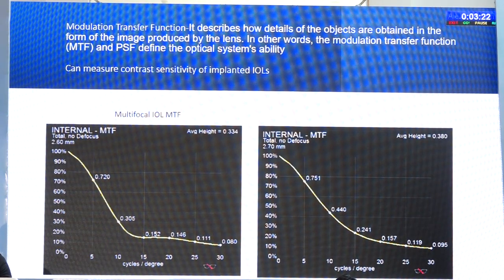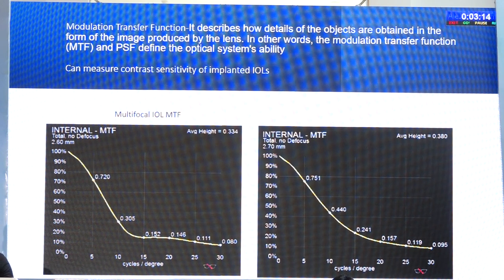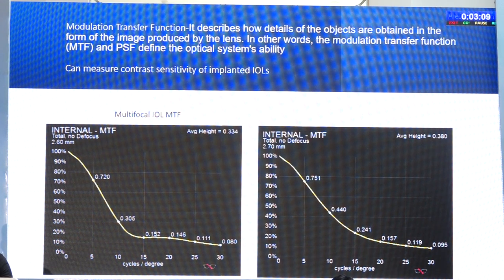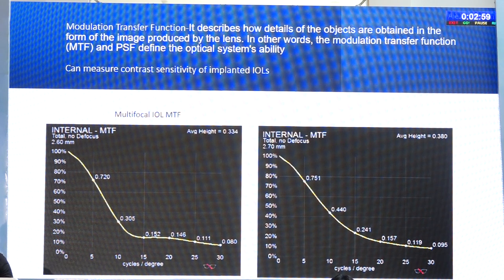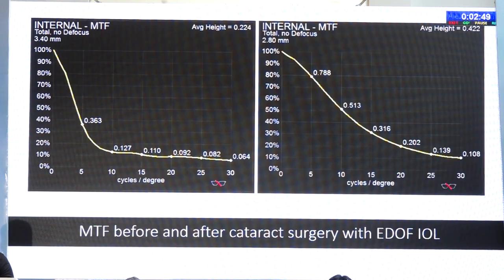The I-Trace also gives a modulation transfer function (MTF), which describes how objects are formed as an image in the eye. If a ray of light passes through the optical system, it measures the amount of spread and characterizes it as an MTF factor — essentially contrast sensitivity. A cataract patient has an MTF at 10 cycles per degree of less than 40%; after surgery with a monofocal IOL it improves above 40%, and a monofocal lens gives the highest MTF at about 60% at 10 cycles per degree.